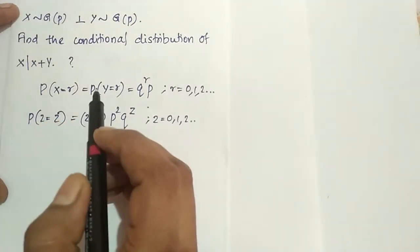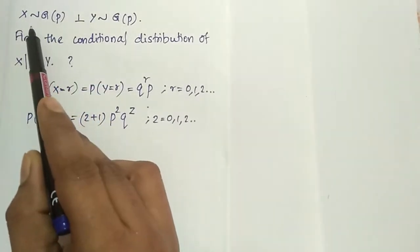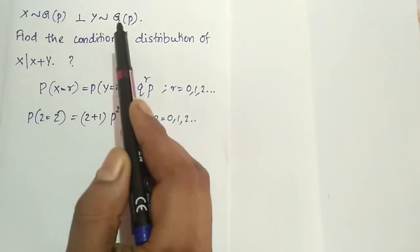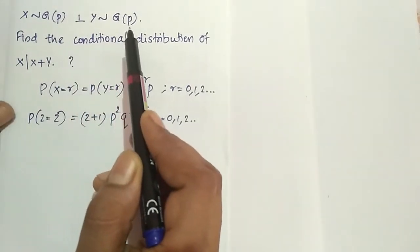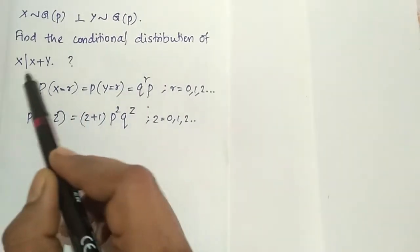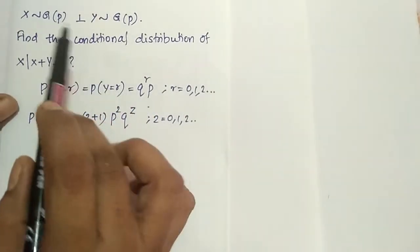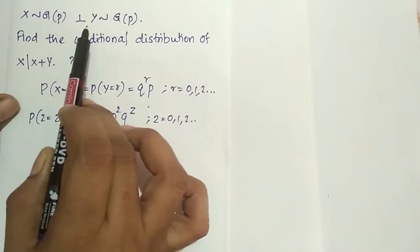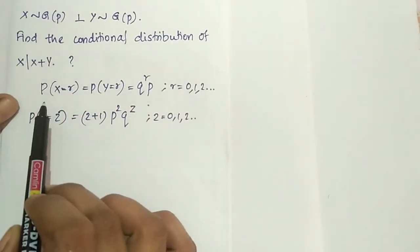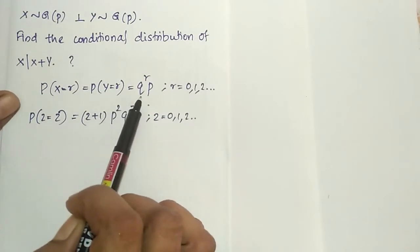Hello friends, in this video I am going to discuss a problem. X follows a geometric distribution with parameter p and Y follows a geometric distribution with parameter p. We have to find the conditional distribution of X given X plus Y. X and Y are independent also, and this independence is very important here.